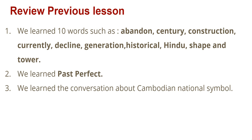Before we go to Unit 2, let's review Unit 1. In Unit 1 we learned words such as: abandon, century, construction, currently, decline, generation, historical, Hindu, shape, and tower.